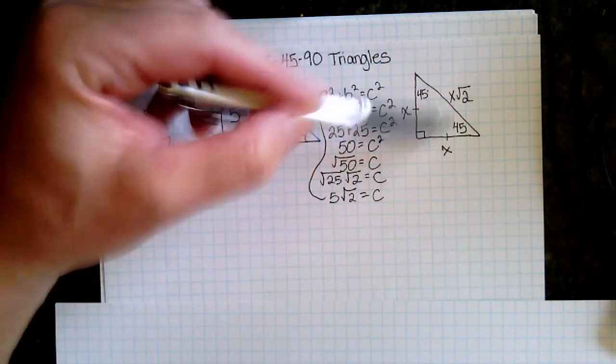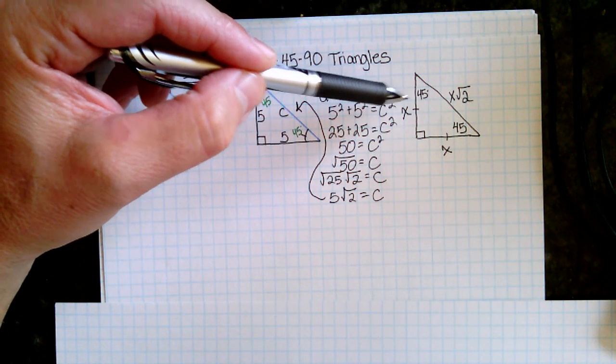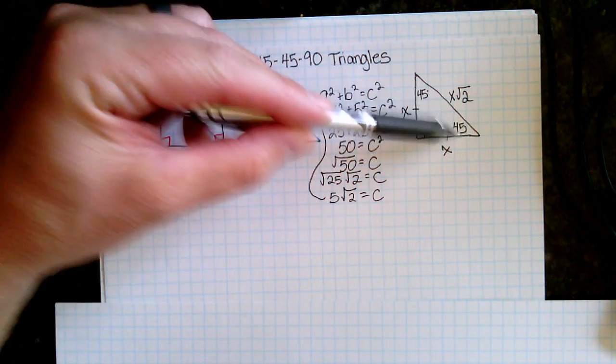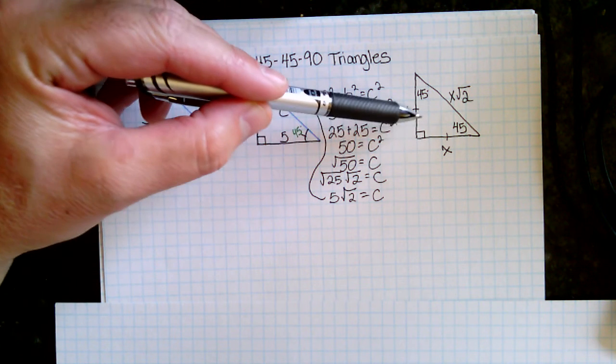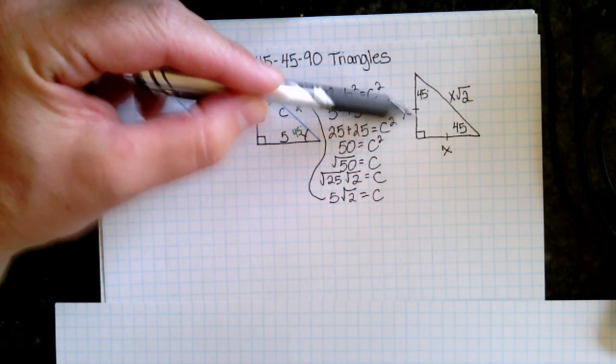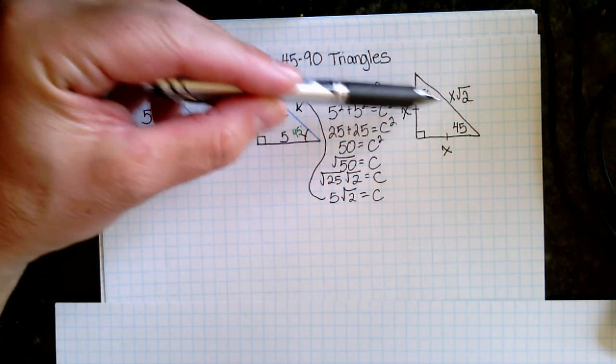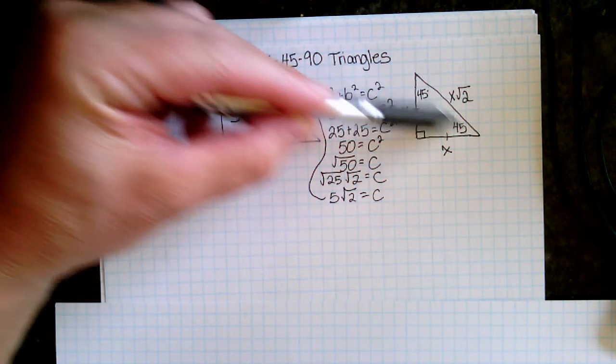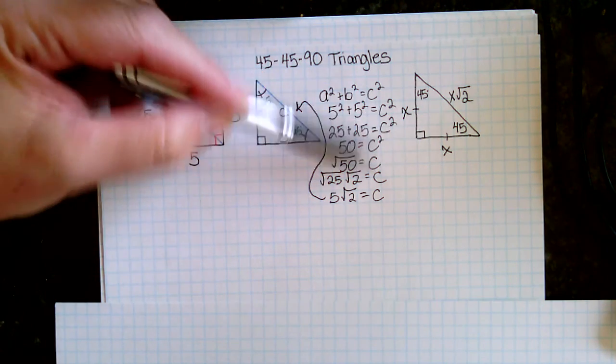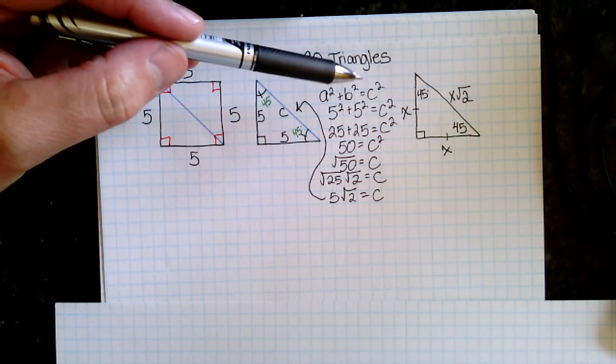So, the relationship of the sides to the angles, since you have two 45-degree angles, the sides opposite those angles are going to be equal, and that makes this triangle isosceles. So those two are the same. And then, whatever this side is, the hypotenuse is always root 2 times whatever that side is. And we just solved that or proved that with Pythagorean theorem.